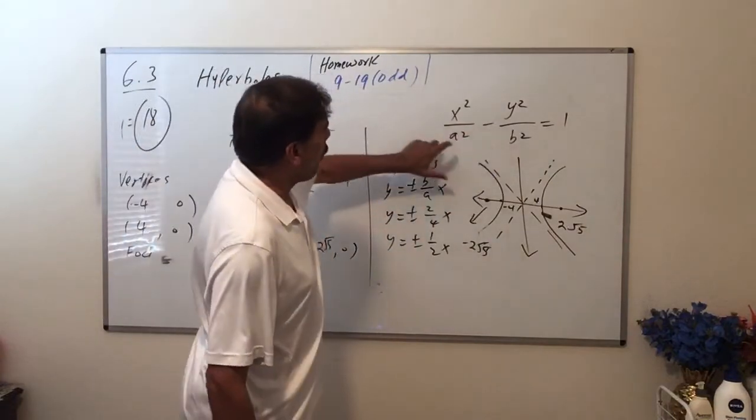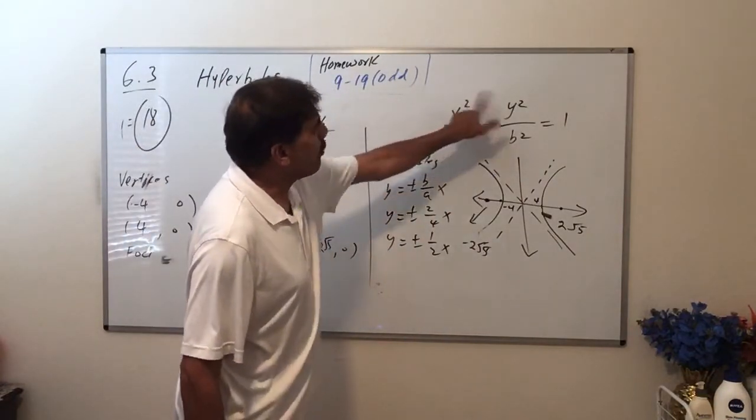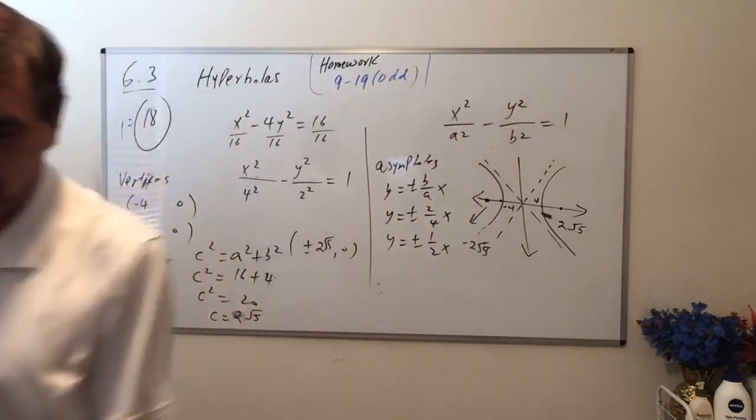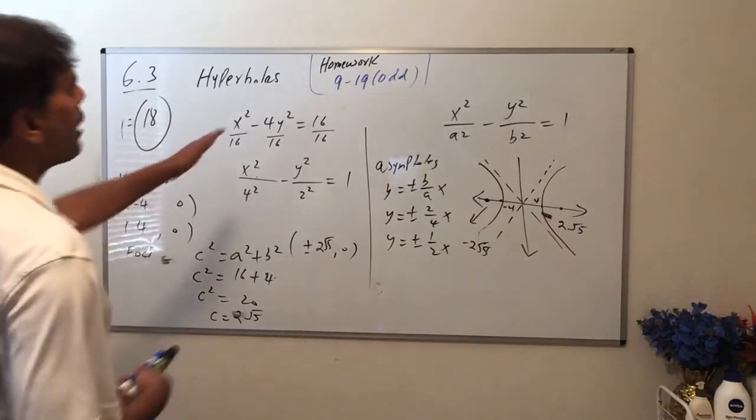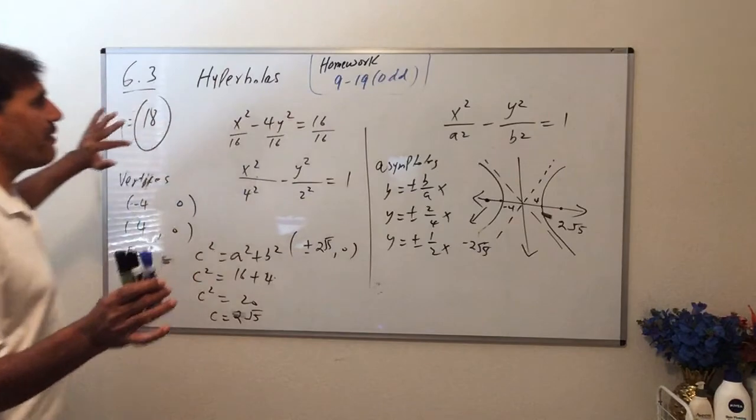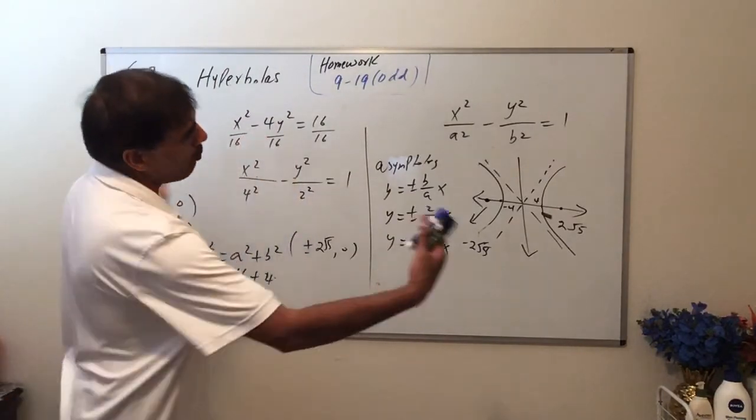Okay, so again, the homework is 9 to 19. In this video, we only covered when your branches open left and right because the x-squared term is positive. I'm so sorry again for the cutting out. We're almost done. We have one more lecture after this, which is 6.4 on Thursday, and that's it. We're going to do only six chapters.